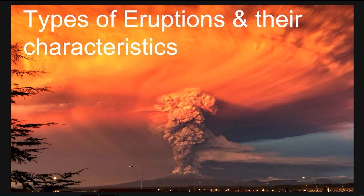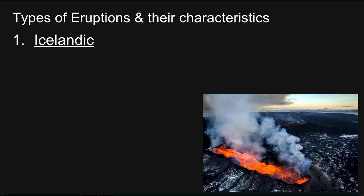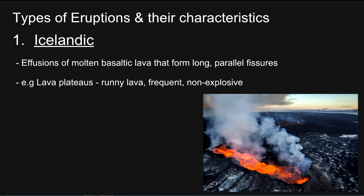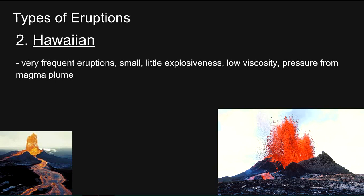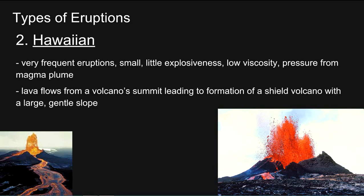Types of eruptions and their characteristics. First, Icelandic: effusions of molten basaltic lava that form long parallel fissures — just cracks in the ground. Examples are lava plateaus, with runny lava, frequent and non-explosive. Second, Hawaiian: very frequent eruptions, small, little explosiveness, low viscosity, and pressure from magma bloom. Lava flows from a volcano summit, leading to formation of a shield volcano with a large, gentle slope. Height of eruption column is less than 2 km.